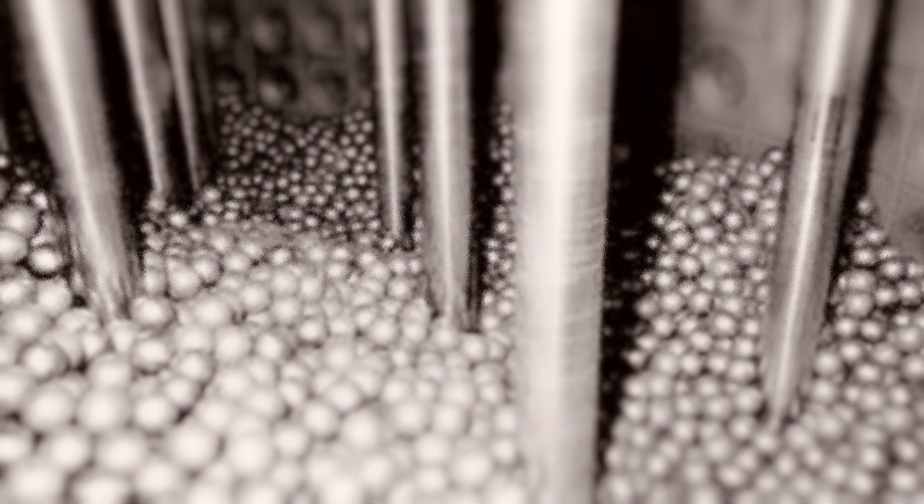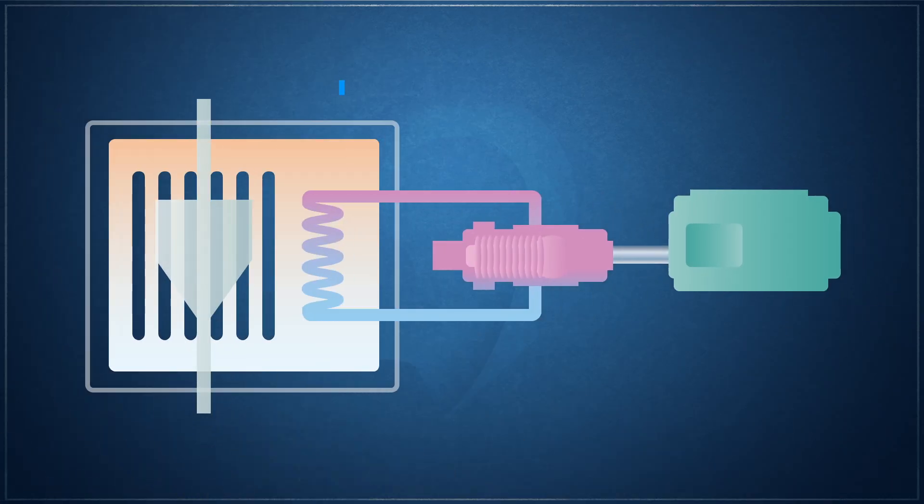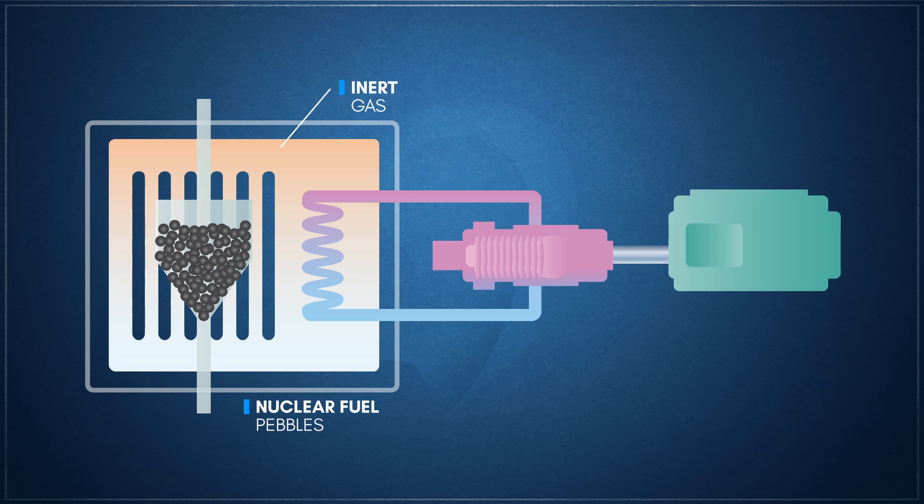Pebble bed reactors are a unique design that are powered by spherical tennis ball-sized fuel elements called pebbles. The outer shell of these pebbles are composed of pyrolytic graphite, which not only serves as a neutron moderator, but also forms a structural containment shell around the fissile material that is twice as thermally conductive as copper, immune to corrosive effects, and can withstand high stresses and temperatures exceeding 2000 Celsius.